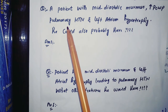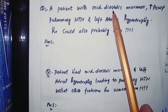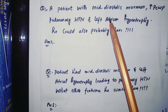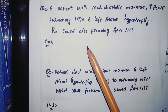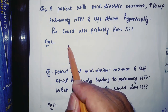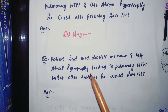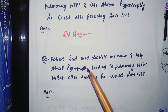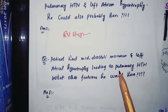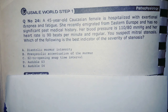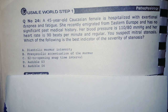So from a mid-diastolic murmur with increased pulmonary capillary wedge pressure, pulmonary hypertension, and left atrial hypertrophy, we identify mitral stenosis. Left atrial hypertrophy leads to right ventricular hypertrophy as well. Now here is a clinical case: a 45-year-old female is hospitalized with exertional dyspnea — due to pulmonary hypertension — and fatigue. She recently immigrated from Eastern Europe and has no significant past medical history. Her blood pressure is 110/80 mmHg and heart rate is 90 beats per minute and regular. You suspect mitral stenosis.